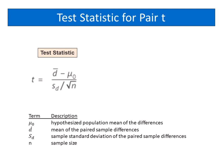On the other hand, the T value for pair T test is mean of the paired sample differences minus hypothesized population mean of the differences divided by sample standard deviation of the paired sample differences divided by square root of sample size.